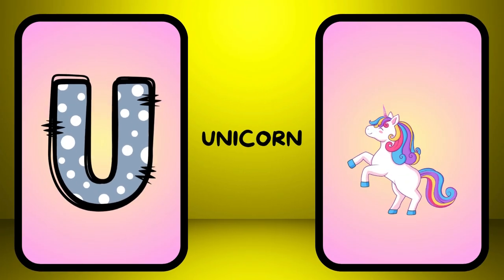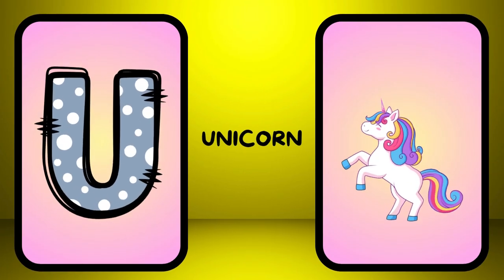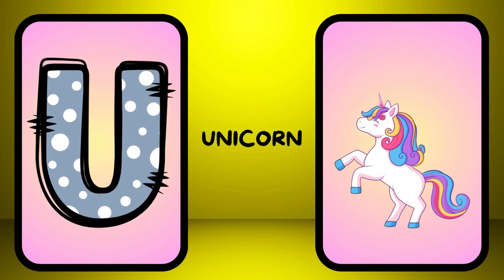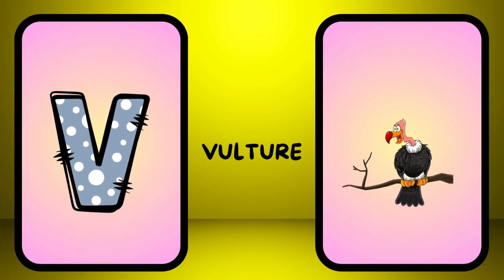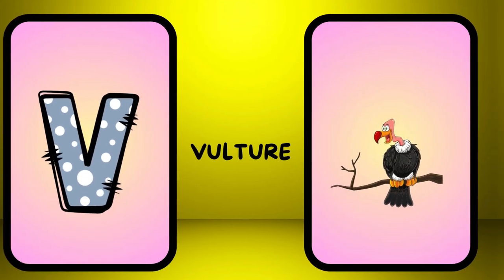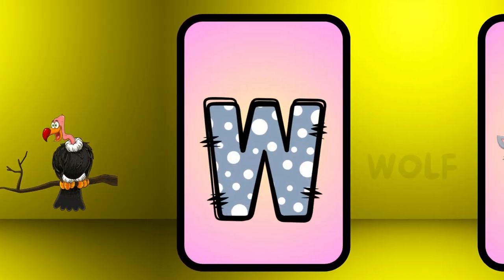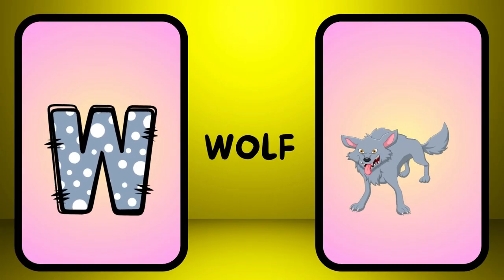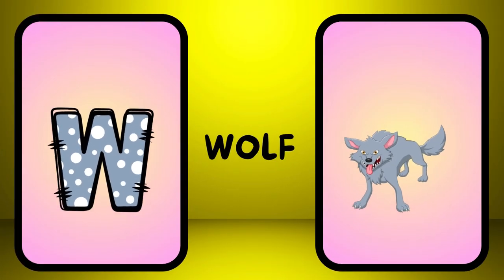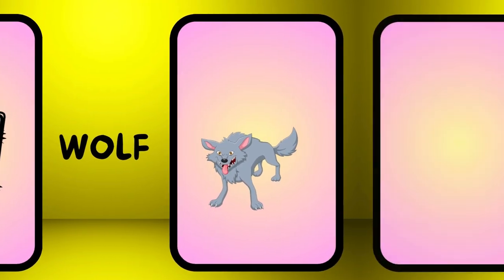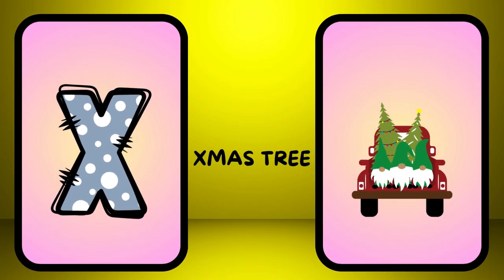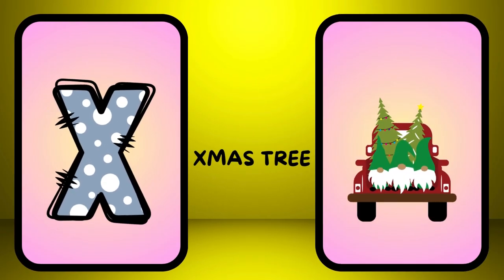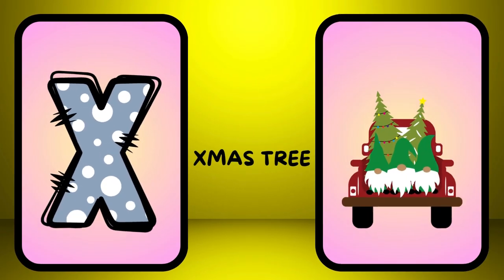U is for unicorn, u-u-unicorn. V is for vulture, v-v-vulture. W is for wolf, w-w-wolf. X is for x-moss tree, x-x-x-moss tree.